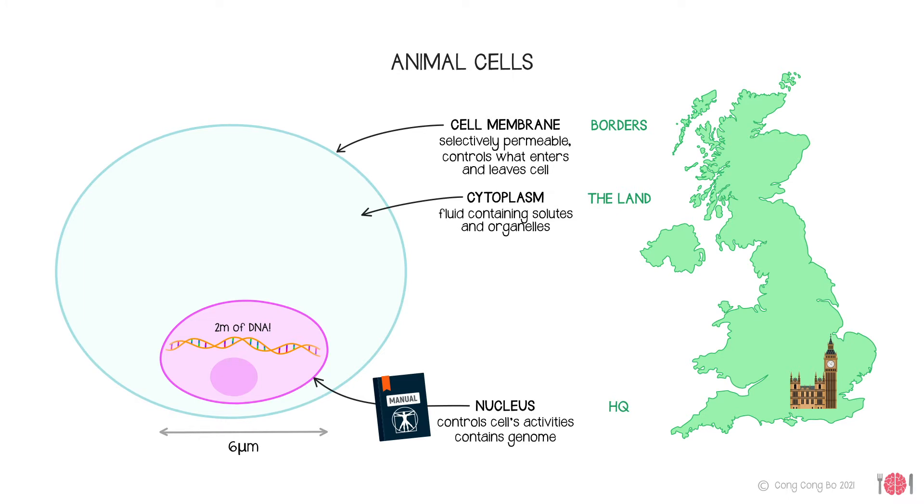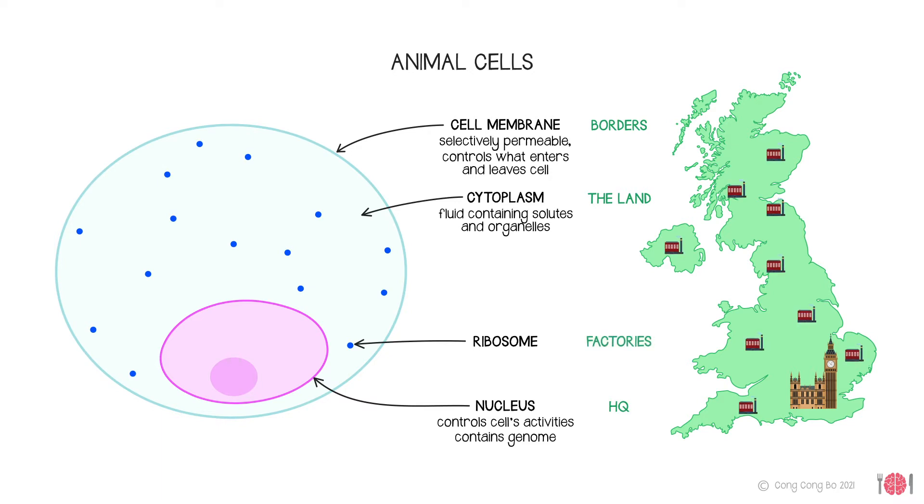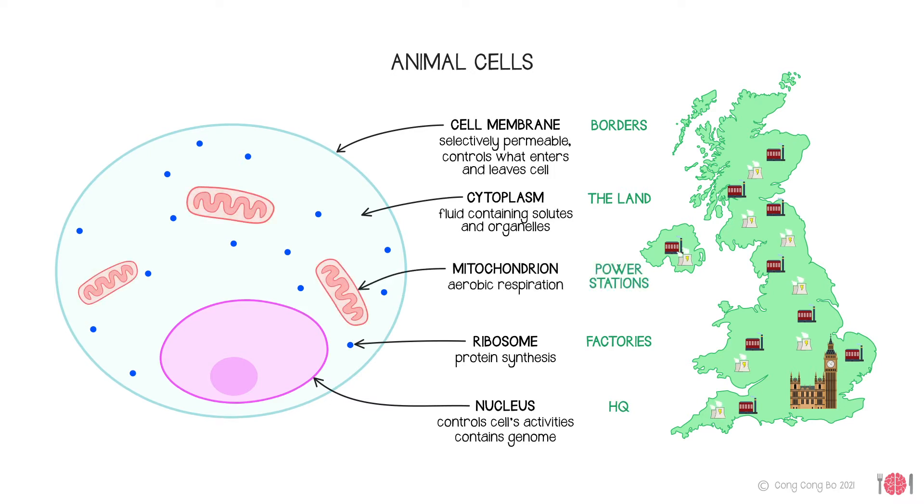The cytoplasm contains millions of granules called ribosomes, which are like the cell's factories. They receive recipes sent out from the nucleus and synthesise all the proteins we need to function. All this activity requires energy, which is supplied by mitochondria, the cell's power stations. Aerobic respiration takes place here, transferring the energy from the food we eat into high-energy molecules easily used by the cell to fuel its metabolism.